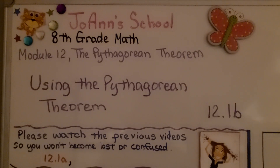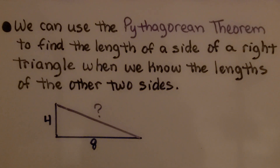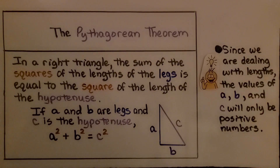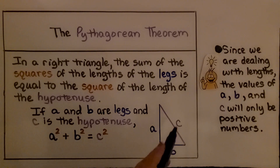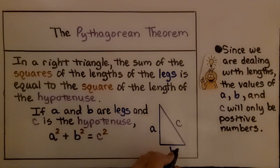Using the Pythagorean Theorem, Lesson 12.1b. We can use the Pythagorean theorem to find the length of a side of a right triangle when we know the lengths of the other two sides. As we learned in the previous video, the Pythagorean theorem states that in a right triangle, the sum of the squares of the lengths of the legs is equal to the square of the length of the hypotenuse. So if a and b are legs and c is the hypotenuse, a² + b² = c². The values of a, b, and c will only be positive numbers.